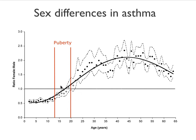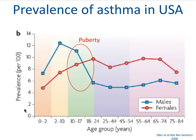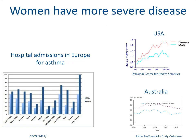Something is happening during puberty with the risk of developing asthma. Boys have asthma more often than girls, and then during puberty they tend to grow out of their asthma — the prevalence goes down. While in girls, the asthma prevalence slowly increases and stays high for their reproductive lives. Adult women not only have asthma more often, they also tend to have more severe disease, because they tend to have non-allergic asthma, which in general is a more severe disease and more difficult to treat.